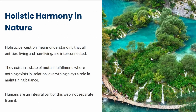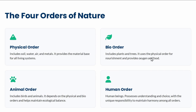Nature operates through balance, cycles, and responsible relationships among all entities. We talk about four orders of nature, and all four are interconnected — that interconnectedness is a big part of nature. The first is the physical order: soil, water, air, minerals, and metals, which provides the base for all life. The second is the bio order, which includes plants and trees, converting physical materials into food and oxygen.